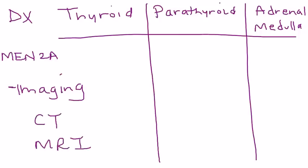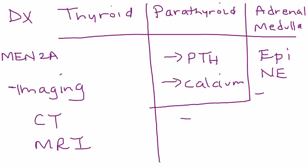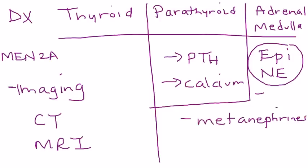In addition to imaging, blood and urine tests are used. For a suspected parathyroid tumor, you can measure parathyroid hormone (PTH) as a simple blood test, and also measure calcium levels. For the adrenal medulla, epinephrine and norepinephrine can be measured directly. You can also measure the breakdown products — or metabolites — of these catecholamines, known as metanephrines, via blood or urine tests.